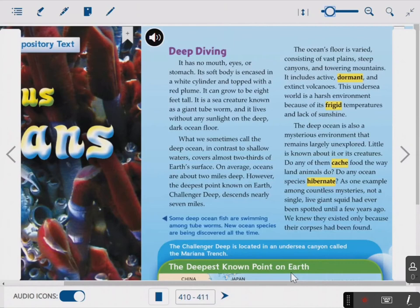The ocean's floor is varied, consisting of vast plains, steep canyons, and towering mountains. It includes active, dormant, and extinct volcanoes. This undersea world is a harsh environment because of its frigid temperatures and lack of sunshine. The deep ocean is also a mysterious environment that remains largely unexplored. Little is known about it or its creatures. Do any of them cache food the way land animals do? Do any ocean species hibernate? As one example among countless mysteries, not a single live giant squid had ever been spotted until a few years ago. We knew they existed only because their corpses had been found.